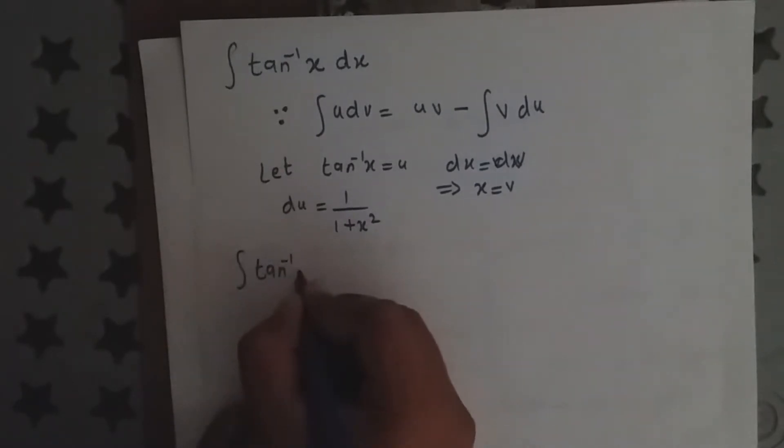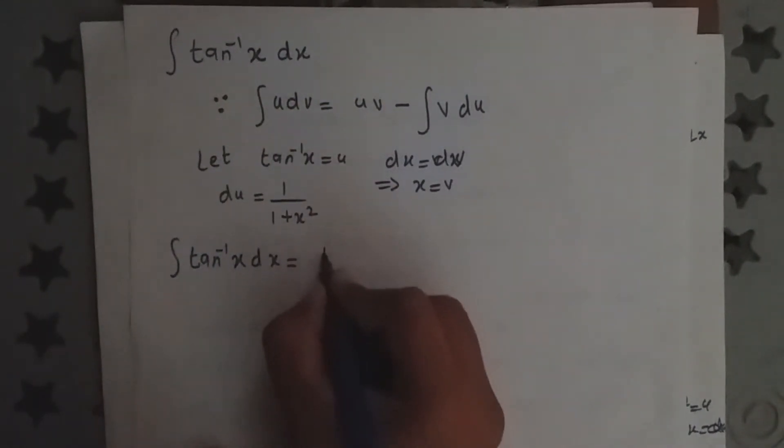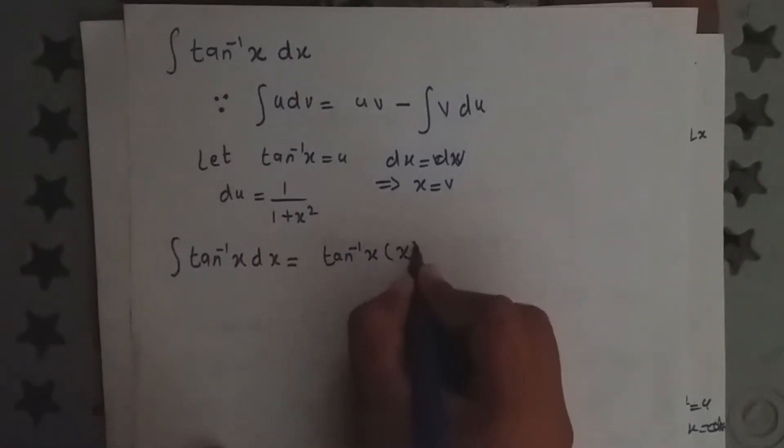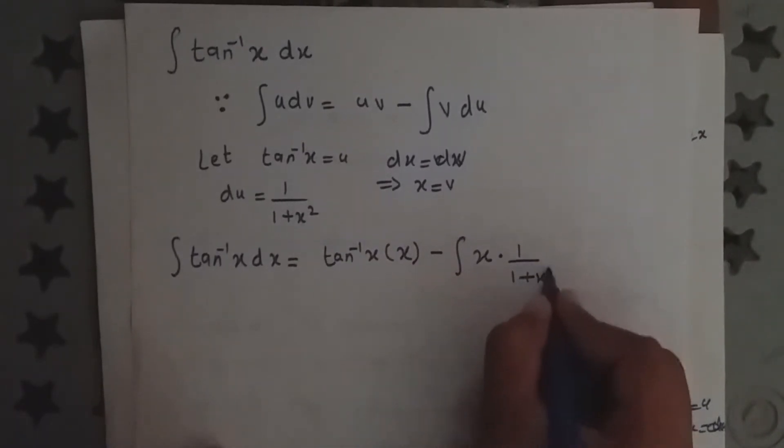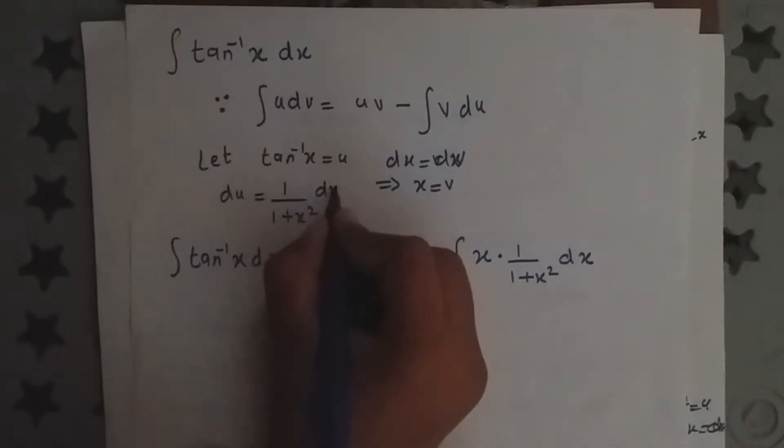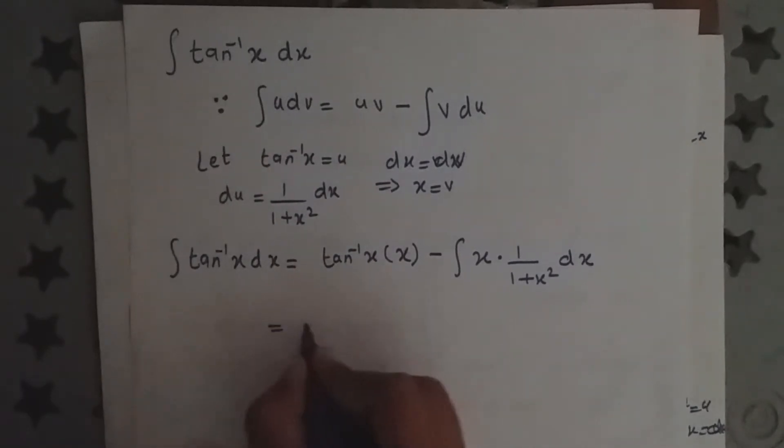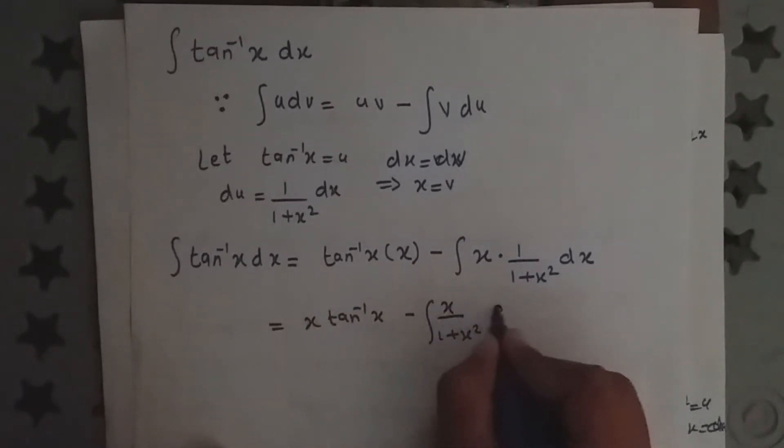So the integration of tan inverse x dx equals tan inverse x multiplied by x minus integration of x over 1 plus x square dx. This becomes x tan inverse x minus integration of x over 1 plus x square dx.